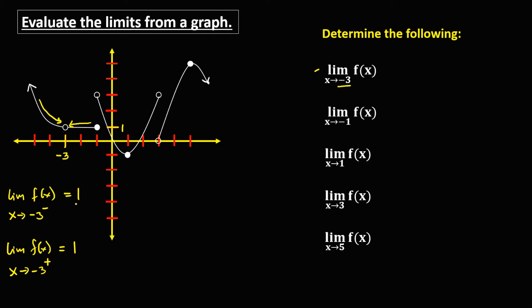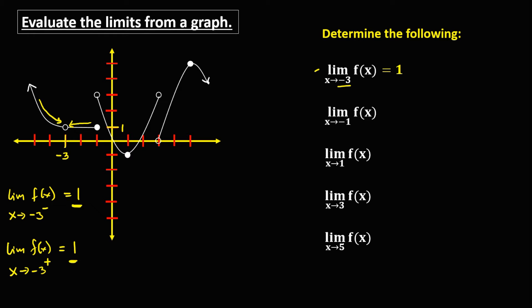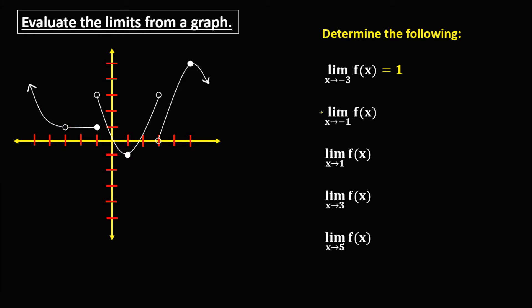Since the left side limit is equal to the right side limit, therefore the limit of f of x as x approaches negative 3 is equal to positive 1.